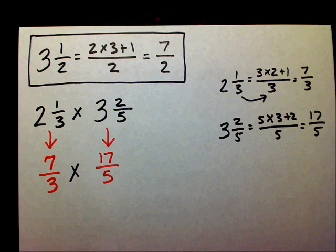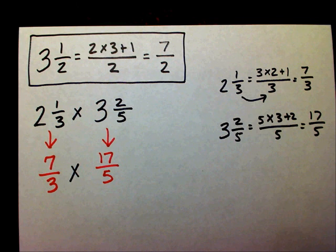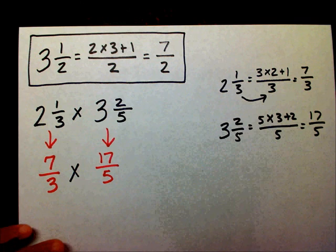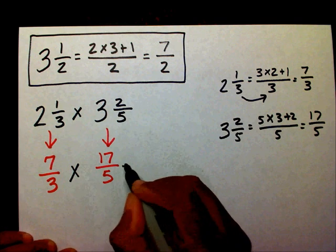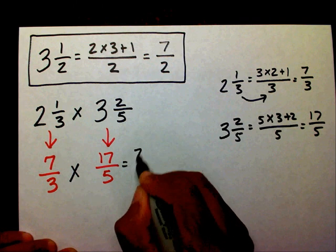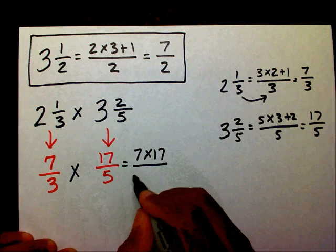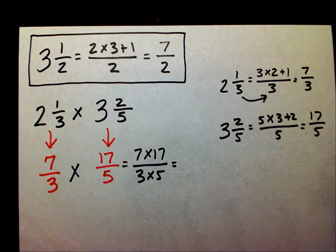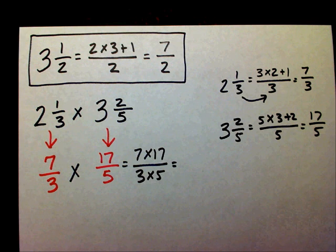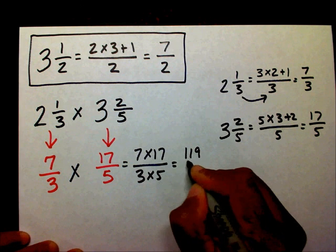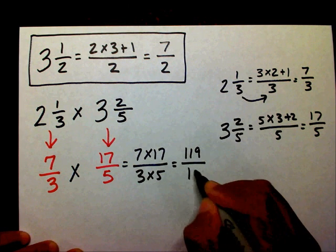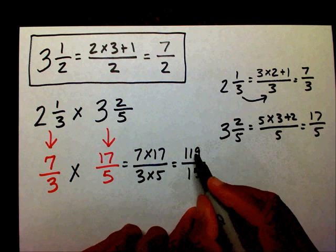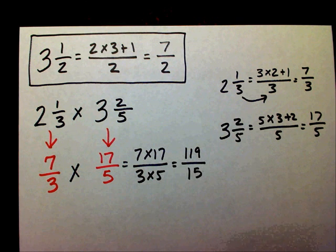Now I need to multiply across — seven times seventeen and three times five. Seventeen times seven gives you one hundred and nineteen, over three times five which is fifteen. I notice I have an improper fraction, so I need to divide one hundred nineteen divided by fifteen.